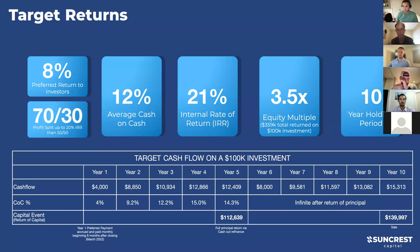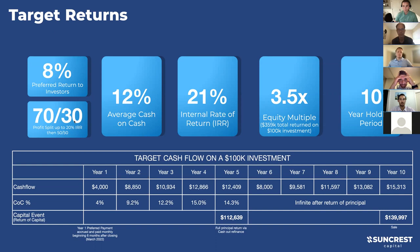For example, if we had to go an entire year without paying out any cash flow to investors, that 8% would accrue and still be due - we'd have to catch up on that 8% first, then pay out other returns. Above that 8%, 70% will go to investors first and 30% will be shared with the general partnership and other partners.